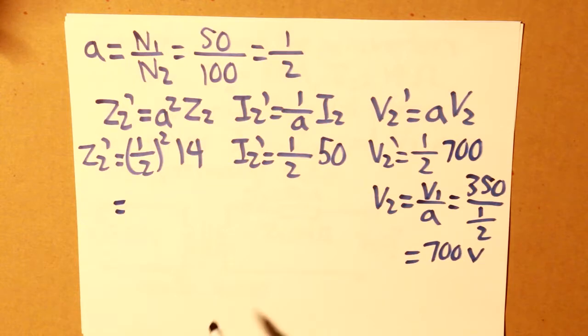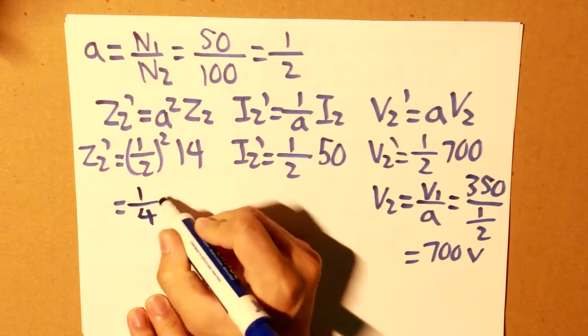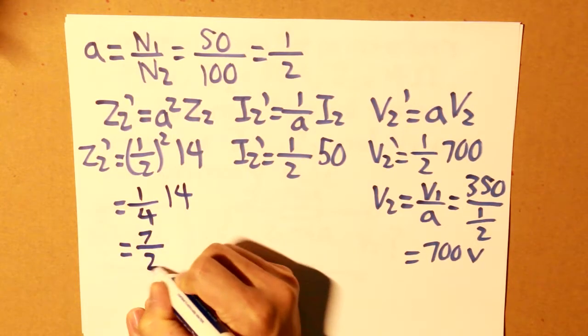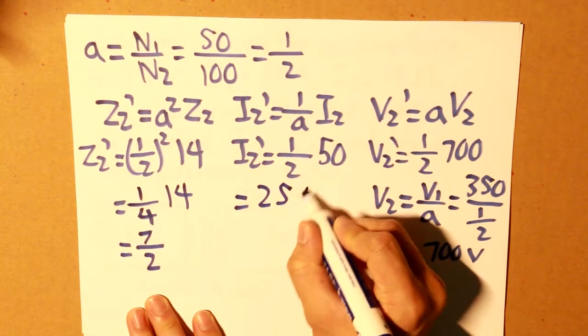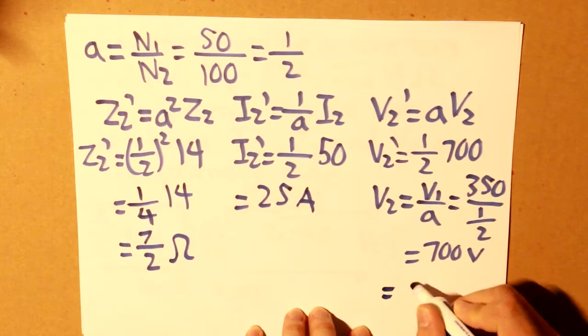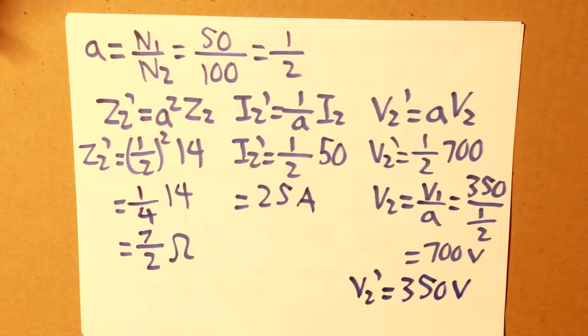Now that we've calculated v2, we can determine the rest of our components. So 1 over 2 squared is 1 over 4, and then we take that, multiply that by 14, and what we get is 7 over 2. I2 is equal to 25 amps, and for our v2 prime that will be 350. So now that we've got our values, we can then draw our impedance transfer, our new transformer circuit.